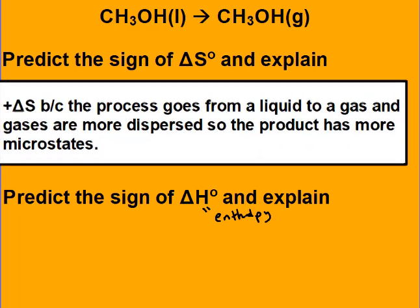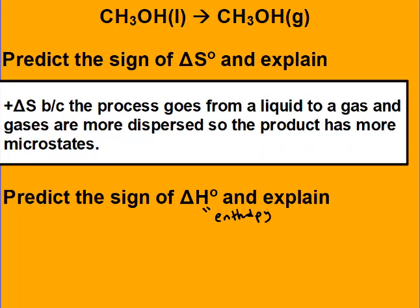For the first one, delta S is positive because the process goes from a liquid to a gas, and gases are more dispersed, so the product has more microstates.